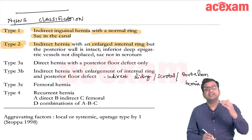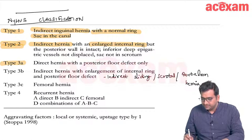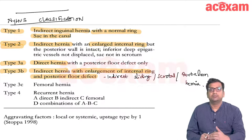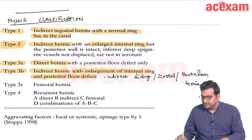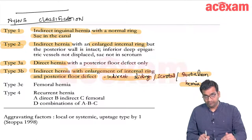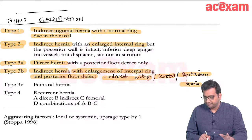Type 3 has three subtypes — 3a, 3b, and 3c. Type 3a is a direct hernia. Type 3b is indirect hernia with enlargement of the internal ring plus a posterior floor defect; this also includes any indirect sliding hernia, scrotal hernia, or pantaloon hernia — a combination of both direct and indirect. Whenever there is a posterior wall or floor defect, it is type 3b. Type 3c is a femoral hernia.